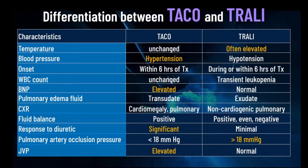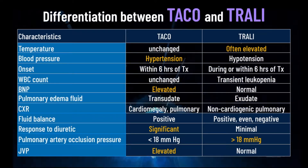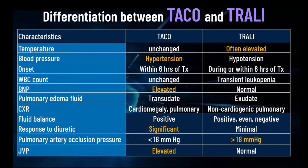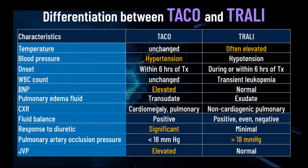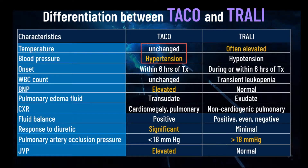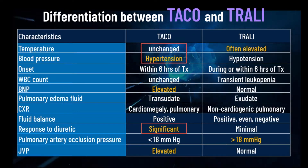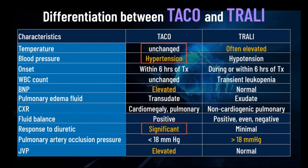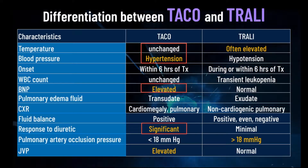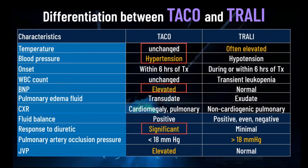TACO may present some signs and symptoms similar to those observed in TRALI. This table demonstrates unique signs and symptoms which can be used to differentiate TACO from TRALI. TACO has no fever, but hypertension and severe headache are always present. TACO responds to diuretic drug treatment and is always related to the blood volume infused. Moreover, in cases of cardiac overload, BNP levels will be highly increased due to congestive heart failure.